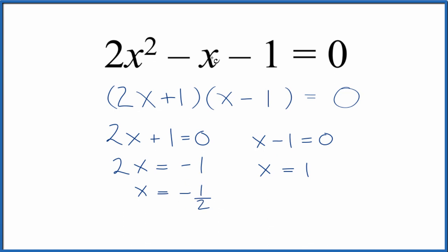So if you put negative 1 half here in for x, you do the math, you get 0. If you put 1 in for x, because 1 squared, that's 1, so we'd have 2 minus 1 minus 1, 2 minus 1 minus 1 equals 0. So that is a value that would make all of this 0, just like negative 1 half.